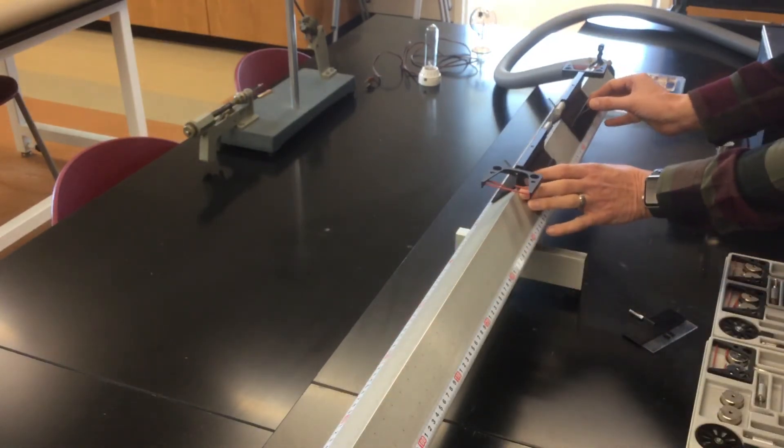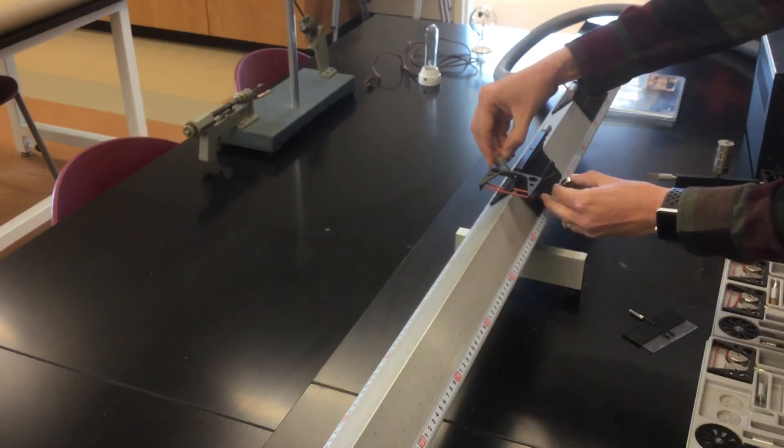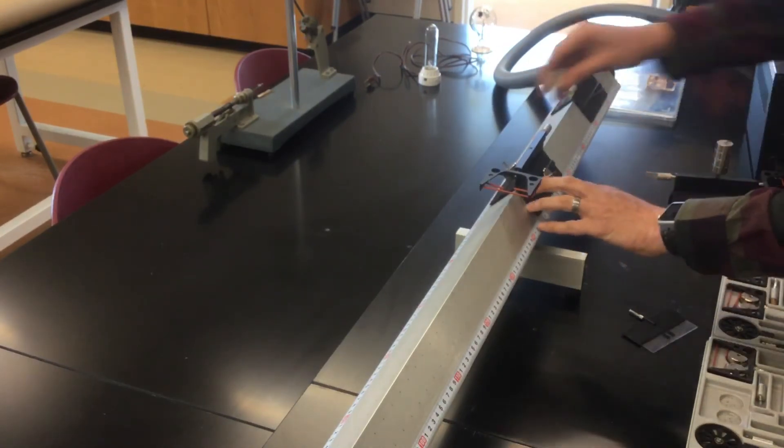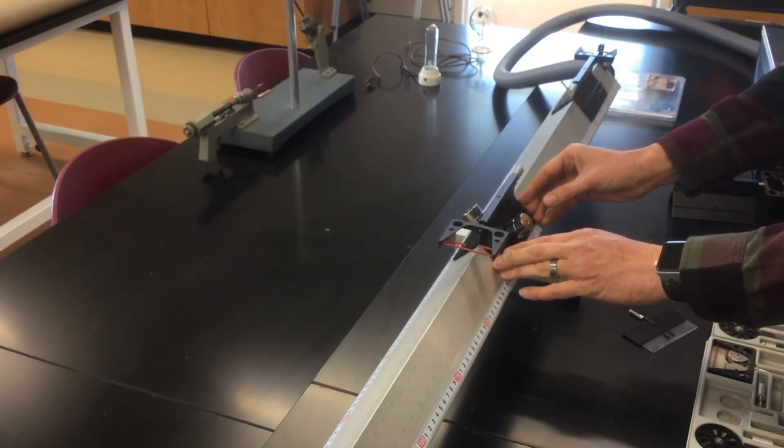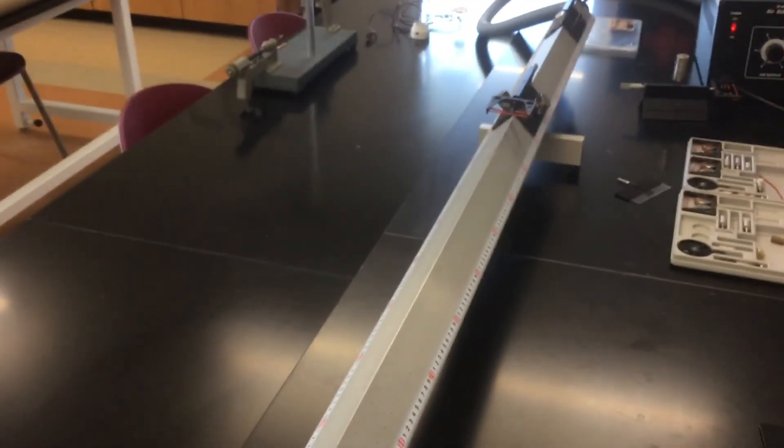Okay, let's try it one more time. This time we'll add a bunch of mass to the stationary glider. The rule is the total momentum after the collision has to equal the total momentum before the collision.